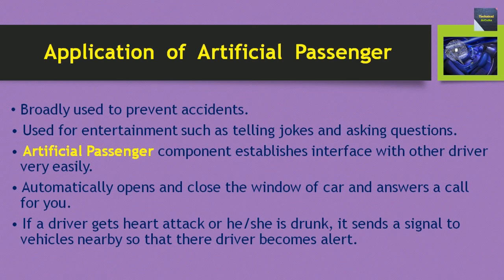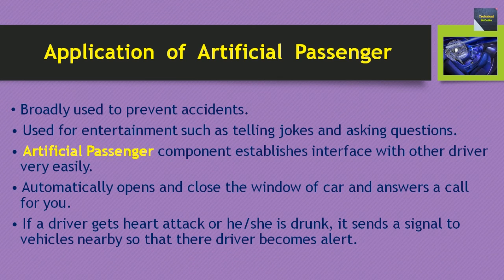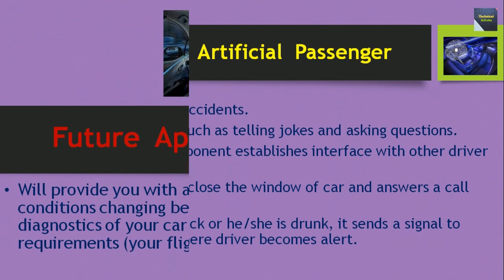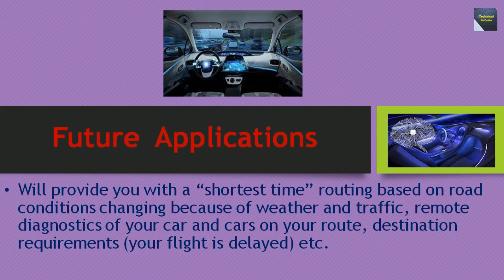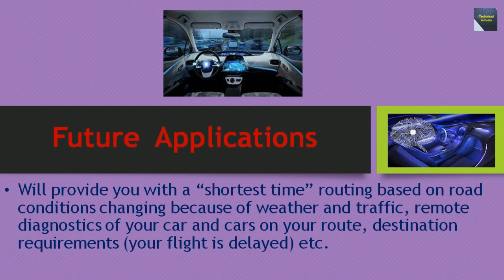Applications of artificial passenger: broadly used to prevent accidents, and used for entertainment such as telling jokes and asking questions. The artificial passenger component establishes an interface with the driver very easily, automatically opens and closes the window of the car, and answers a call for you. If a driver gets a heart attack or is drunk, it sends a signal to vehicles nearby so that their driver becomes alert. Future applications will provide shortest time routing based on changing road conditions due to weather and traffic, remote diagnostics of your car and cars on your route, and destination requirements like notifying you if your flight is delayed.